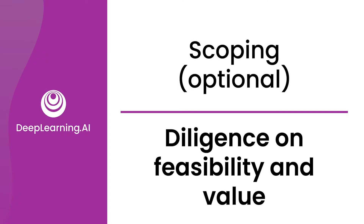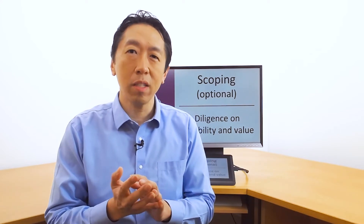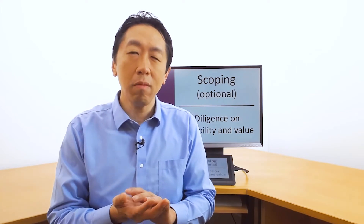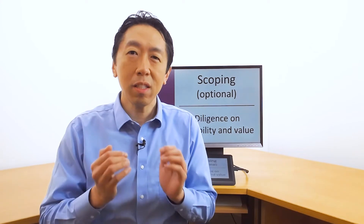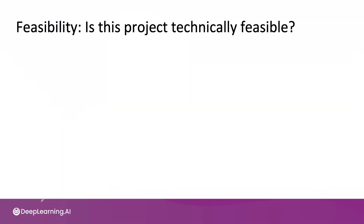In the last video, you heard about a step of assessing a project for technical feasibility and for value. Let's take a deeper look at how you can carry out this diligence step to figure out if a project really is feasible and also how valuable it really is. Let's start with feasibility — is this project idea technically feasible? Before you've started on a machine learning project, how do you know if this thing can even be built?